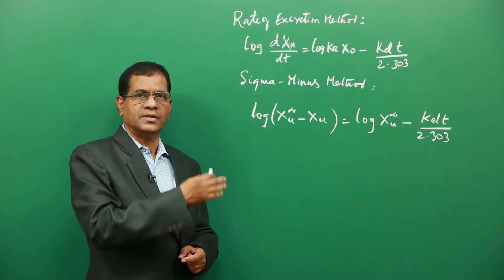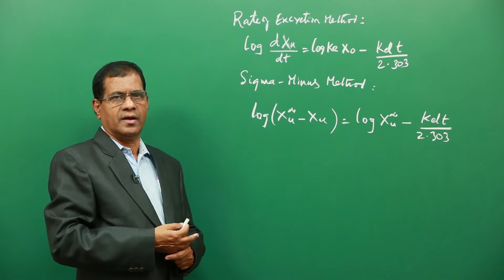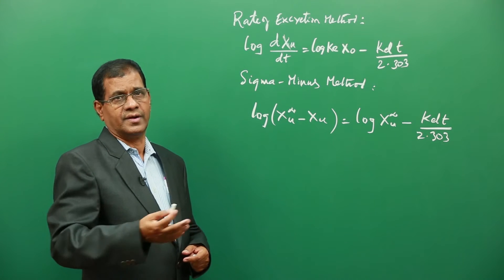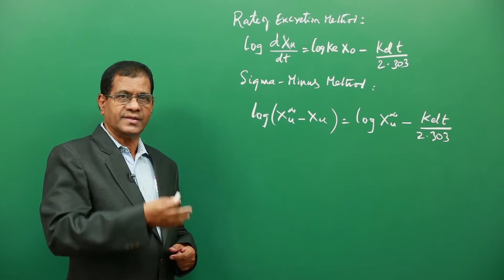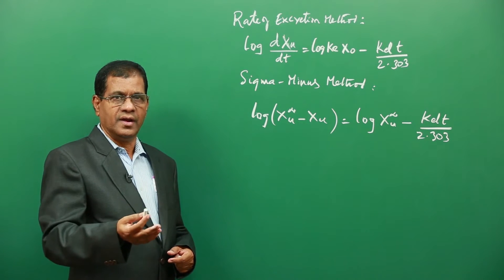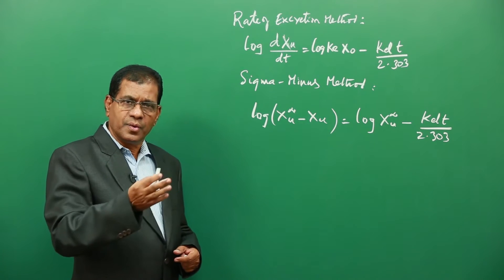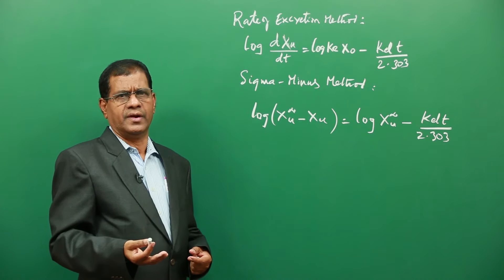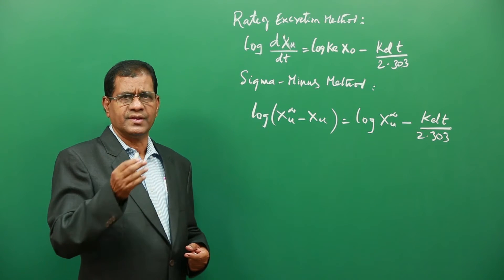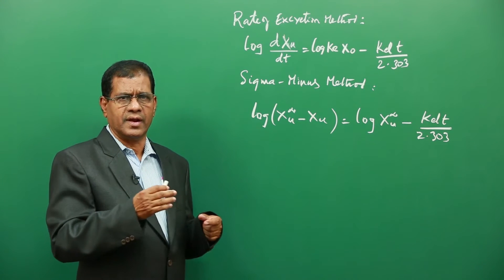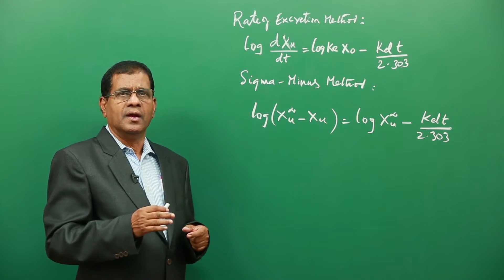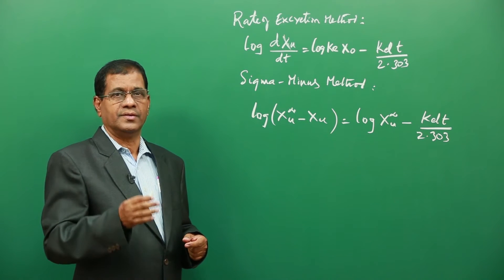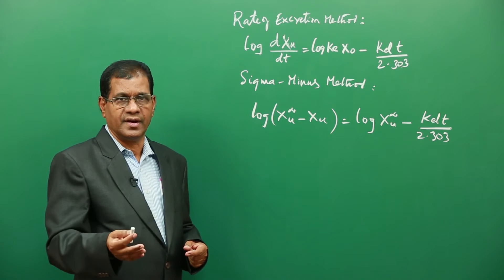Using the excretion data, you have to find out the excretion rate of the drug. The excretion rate corresponding to different time intervals can be estimated by dividing the amount excreted in that time interval by the width of the time interval.